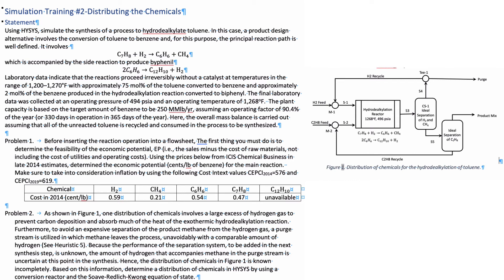One distribution of chemical involves a large excess of hydrogen gas to prevent carbon deposition and absorb much of the heat of the exothermic hydroalkylation reaction. Furthermore, to avoid any expensive separation of the product methane from this hydrogen gas, a purge stream is utilized with methane leaves the process unavoidably with a comparable amount of hydrogen.